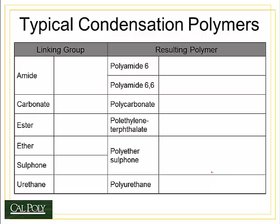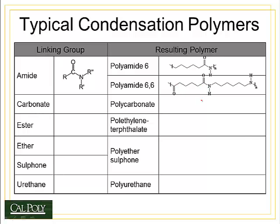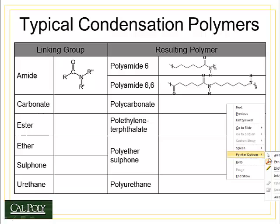Many polymers are made by condensation polymerization, such as amides, carbonates, ethers, sulfones, and urethanes. Amides all contain the same basic cyanide group with a double-bonded oxygen. In polyamide 6, or nylon 6, we see the cyanide group with a carbon-nitrogen bond and a double-bond oxygen. In polyamide 6,6, the same amide group is present, along with a nitrogen-hydrogen bond, six carbon atoms away from another nitrogen-hydrogen bond — hence the name 6,6.